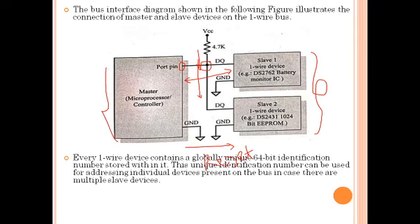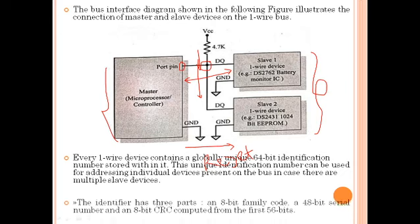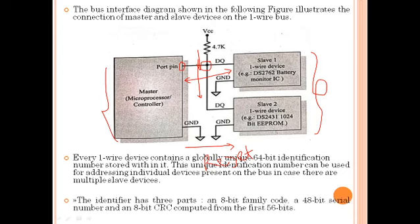Every one-wire device contains a globally unique 64-bit identification number stored within it, which is used for addressing individual devices on the bus. This identifier has three parts: an 8-bit family code, a 48-bit serial number, and an 8-bit CRC computed from the first 56 bits.